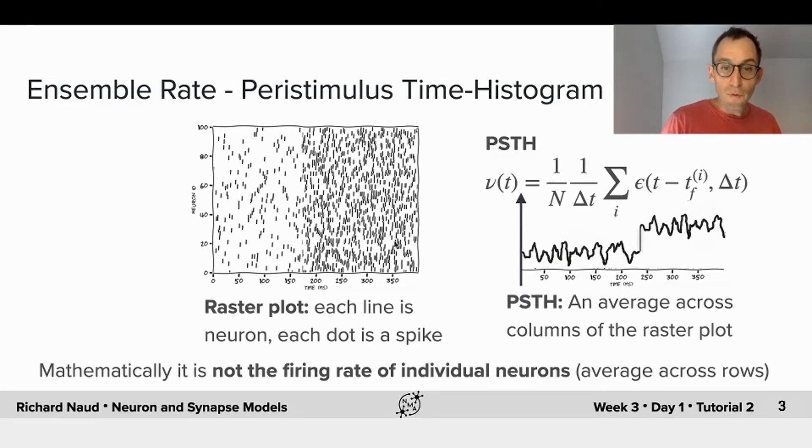Mathematically, you should know that this is not the firing rate of individual neurons. What I mean by this is, if you were to calculate the average number of spikes in every row, it is not the rate that is here nor the rate that is here, it's somewhere in between.